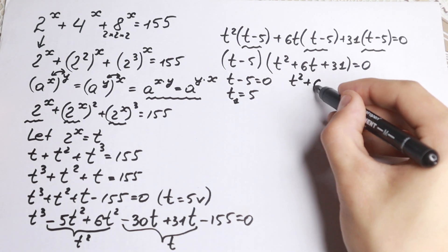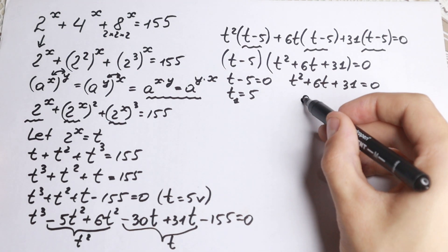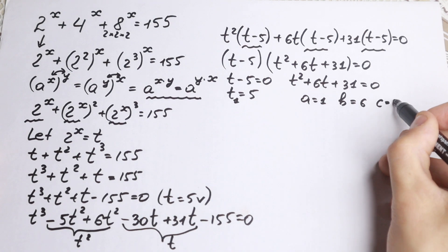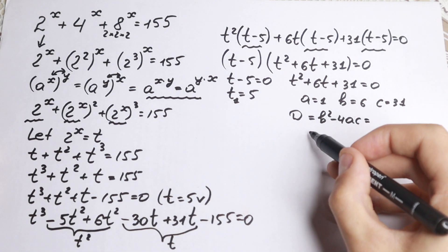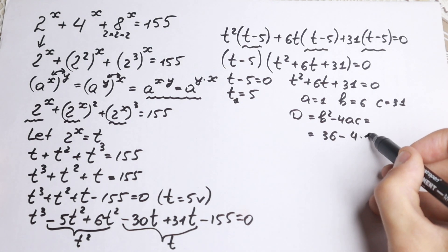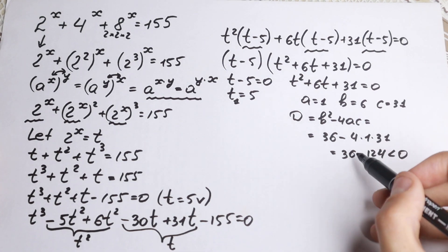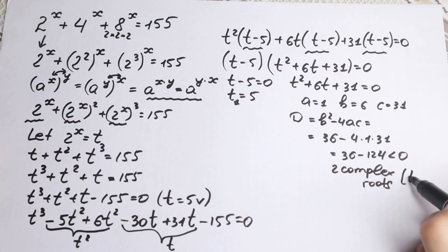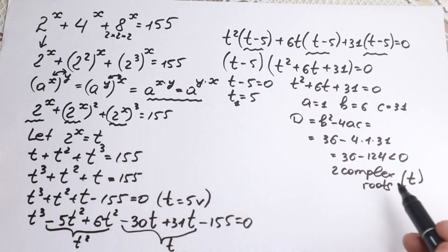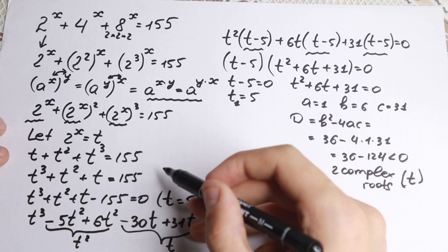For the quadratic factor t squared plus 6t plus 31, we find the discriminant: with a equals 1, b equals 6, c equals 31, discriminant equals b squared minus 4ac, which is 36 minus 124, giving a negative value. This means the quadratic has two complex roots. We could plug those complex values back into 2 to the x equals t, but that would give complicated results involving logarithms and imaginary numbers.